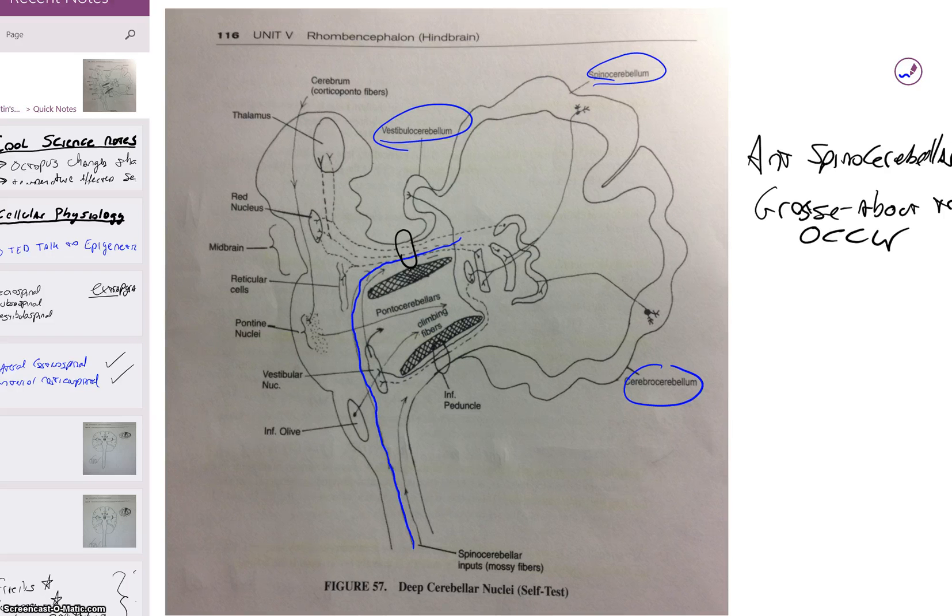Remember the spinal cerebellum, based on the chart on page 107, tells us that the spinal cerebellum gets input from the anterior, the posterior spinocerebellar, and the cuneo. So we know it's going to come up here.